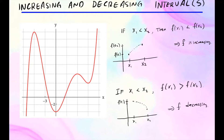Really what we're looking at is: whenever you're increasing the x values, if your function values or y values are getting greater and greater, that means f is increasing. If the y values are getting smaller and smaller, we say f is decreasing. So using that knowledge, let's see if we can understand this graph.